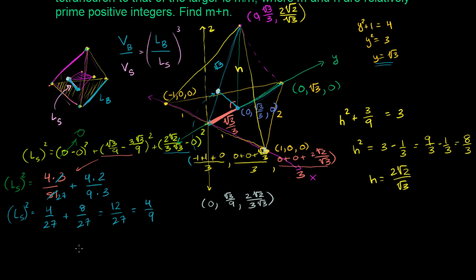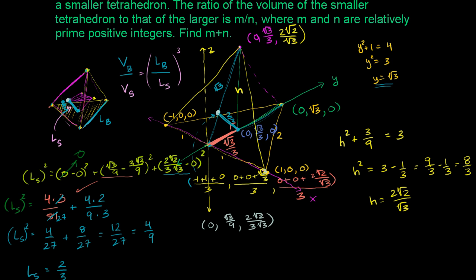Taking the principal square root of both sides — since we only care about positive distances — the length of one side of the small tetrahedron equals the square root of 4 over 9, which is 2 over 3. So this length is 2 thirds, and the length of the large side is 2.